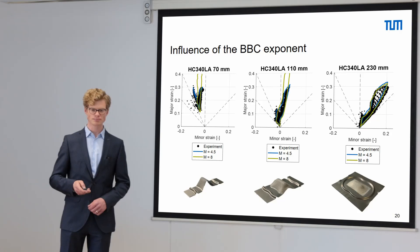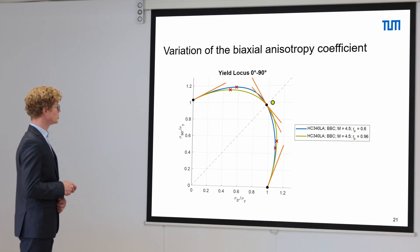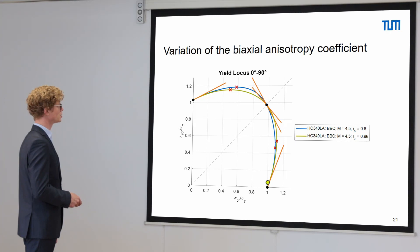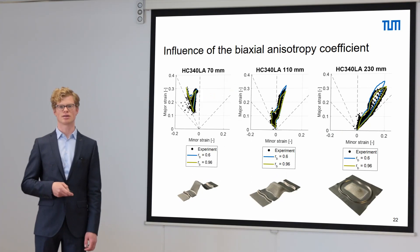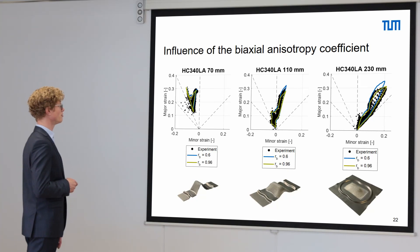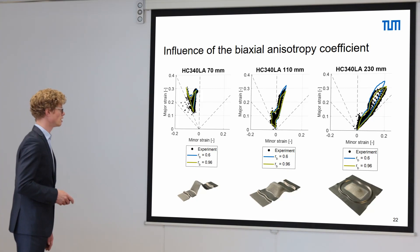As a second parameter, we changed the biaxial anisotropy coefficient rB, which changes the slope of the yield locus in the biaxial area. In the uniaxial area hardly any change of the model is visible. We changed rB from 0.6 (blue) to 0.96 (green). The results show that we hardly see any change for the 70 mm specimen, but we see a significant change for the full specimen with a width of 230 mm. For the 110 mm specimen we also have a dependency on this parameter.